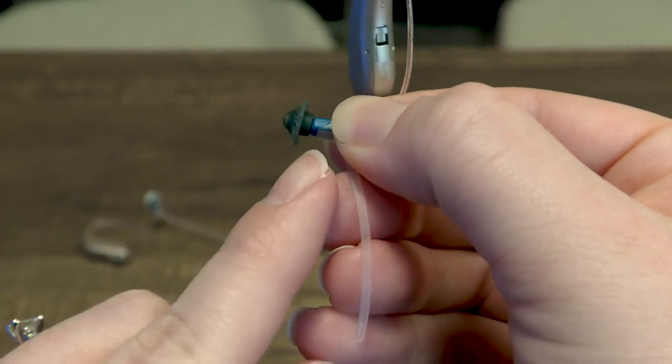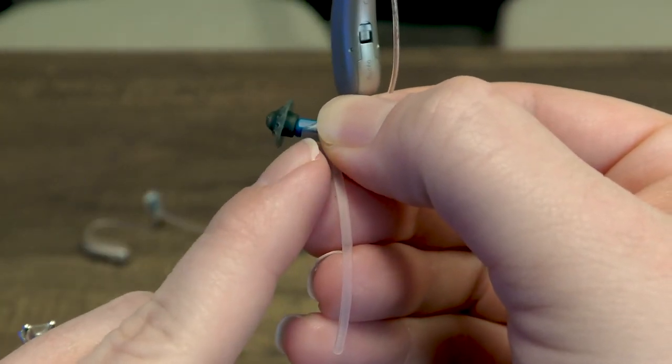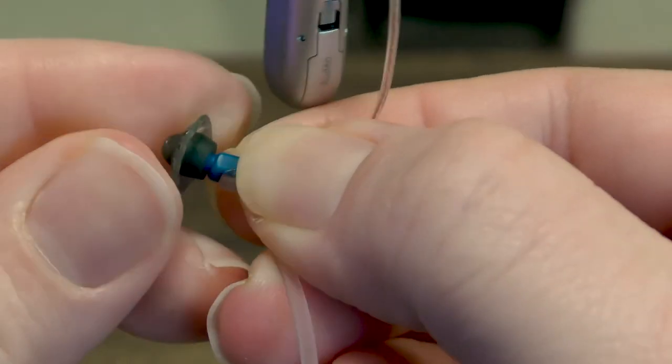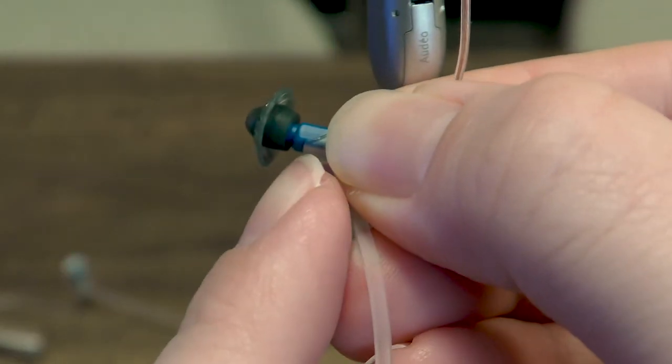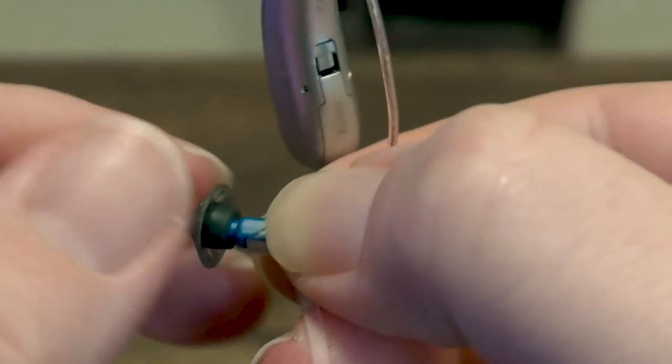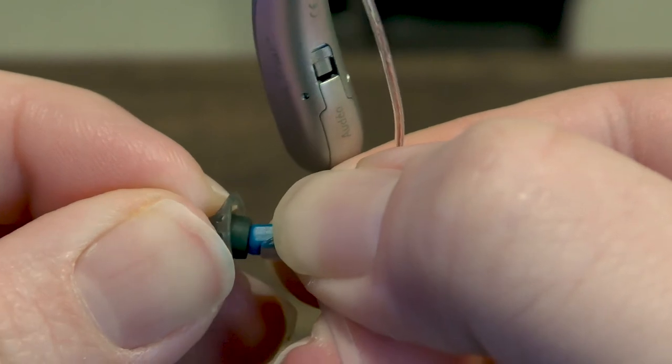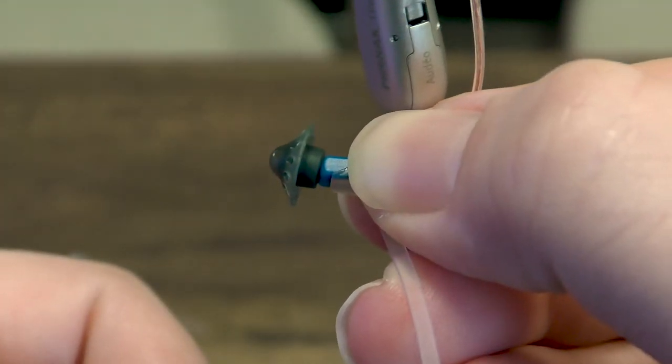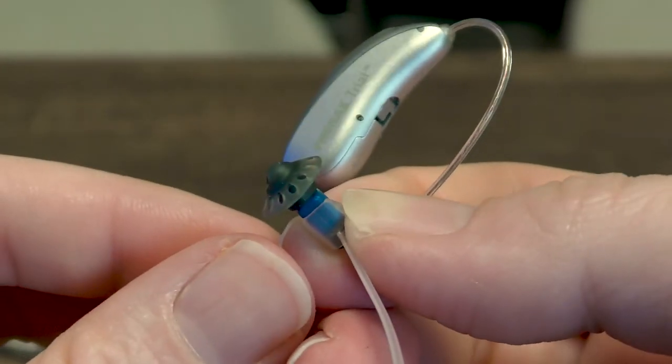I always like to make sure that the dome is all the way on the hearing aid or on the speaker. So for example like that it's not quite fully on to the speaker. You see the little gap right there? So you just want to press it on, make sure that it's fully onto the speaker and that's how you change the dome on the Phonak Marvel.